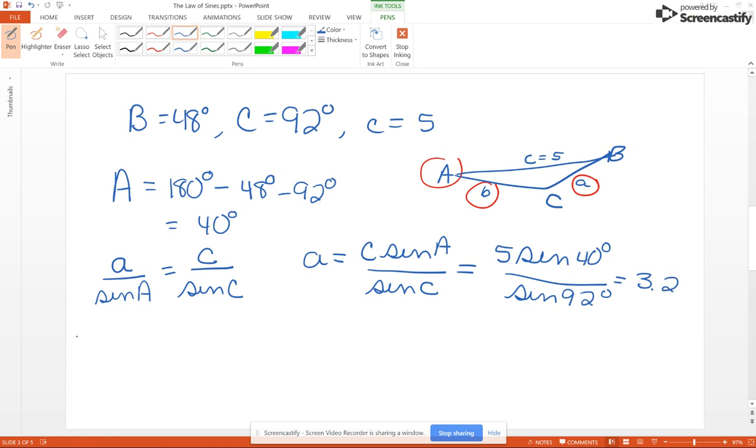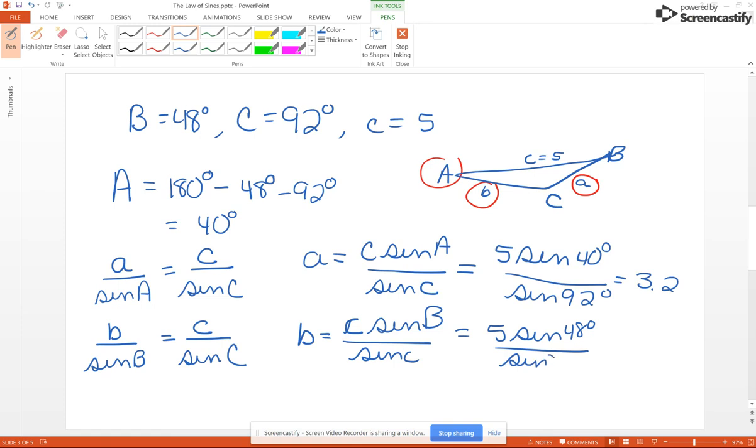Now since this is not a right triangle, we cannot use the Pythagorean theorem to find side B. So we're going to do the exact same procedure - B over sine of B - and we're going to use the same piece of information - C over sine of C. It's best to use the given information whenever possible. Now solving for side B, you get B equals C sine of angle B over sine of angle C. So that's going to be 5 sine of 48 degrees over sine of 92 degrees. And that would give you, when you round to the first decimal place, 3.7.